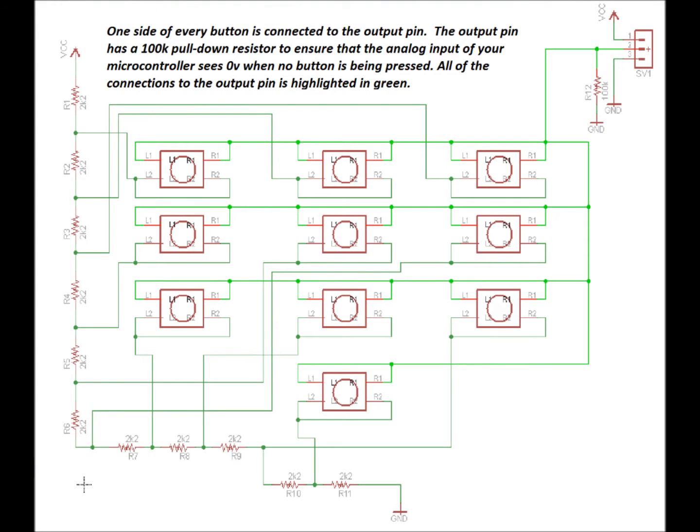This is the schematic for the keypad. As you can see we've got eleven common resistors, in this case 2k2 in value, and they are connected to a voltage divider on the left. And we've got a 100k ohm pull down on the middle pin of our output three pin terminal.